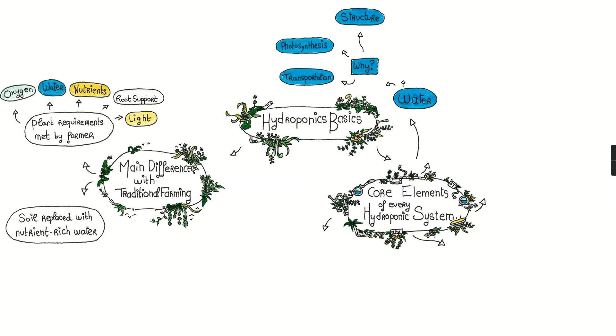In a hydroponic system, this water is often provided filtered with a pH between 6 to 6.5.